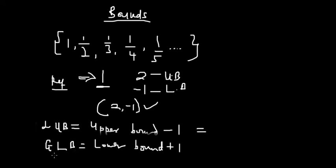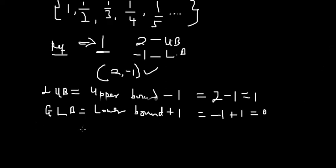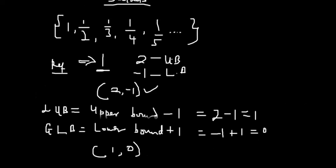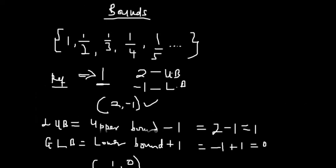Let's apply those formulas. Our upper bound is 2 and our reference is 1, so: lowest upper bound = 2 − 1 = 1. Our lower bound is −1 and our reference is 1, so: greatest lower bound = −1 + 1 = 0. So we've found our upper bound, lower bound, lowest upper bound (which is 1), and greatest lower bound (which is 0).